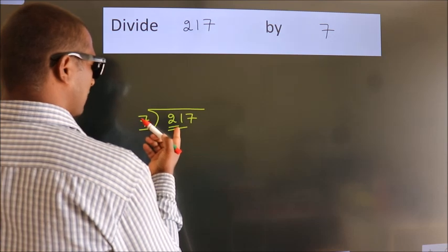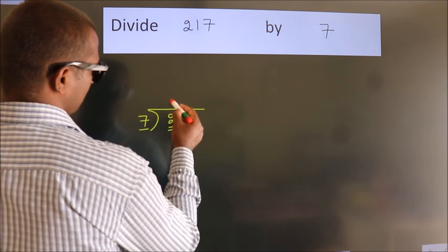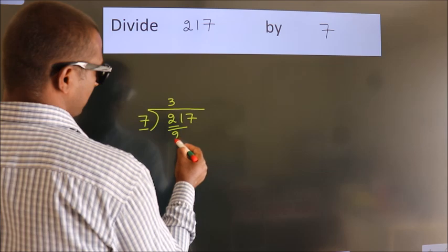When do we get 21? In the 7 table. 7 threes, 21.